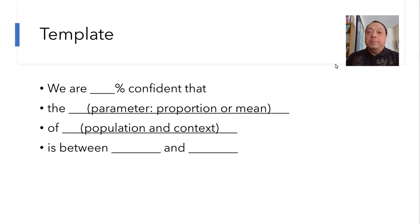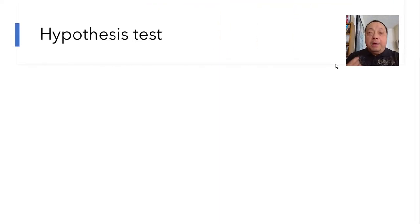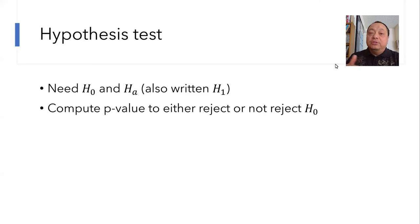Now let's do a hypothesis test. Hypothesis tests get a little more complicated. In a hypothesis test, you start out with a null hypothesis H0 and an alternative hypothesis, which some people write as HA and other people write as H1. You do all the work, you calculate the p-value, and if p-value is less than alpha, you reject the null hypothesis.